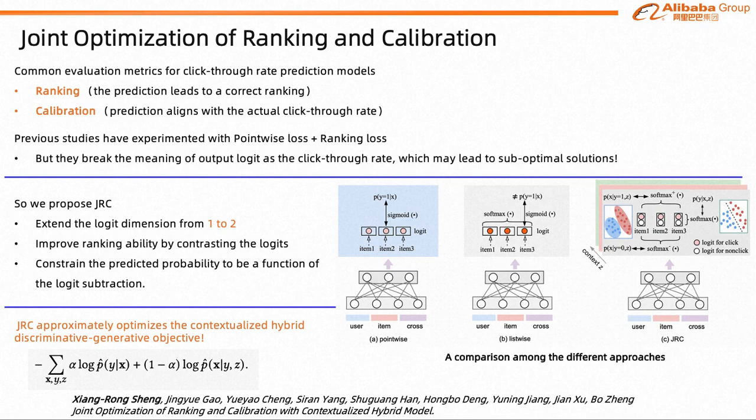We further show that JRC consolidates the interpretation of logits, where the logits models the joint distribution. With such an interpretation, we prove that JRC approximately optimizes the contextualized hybrid discriminative and generative objective.